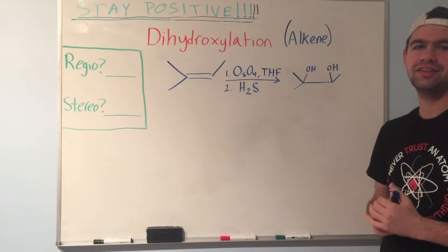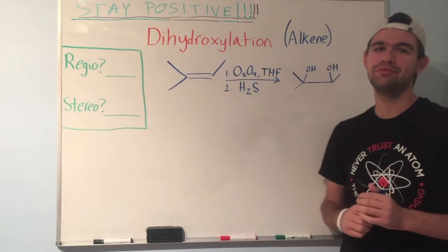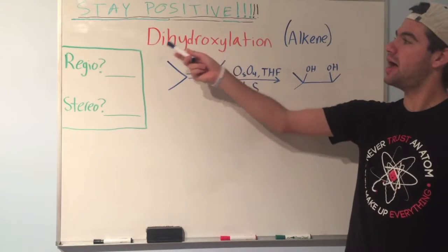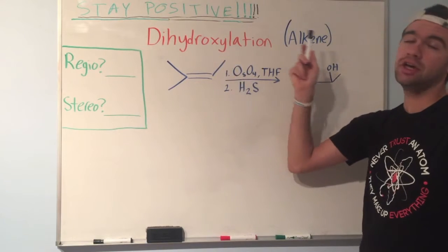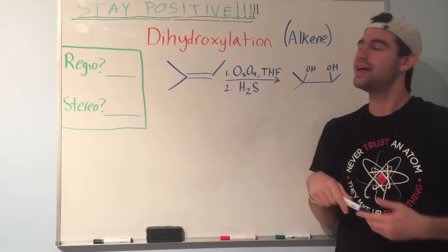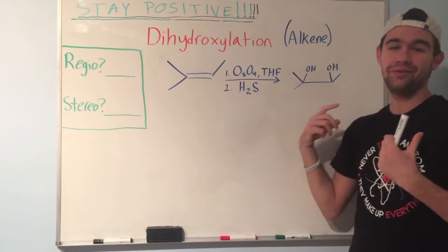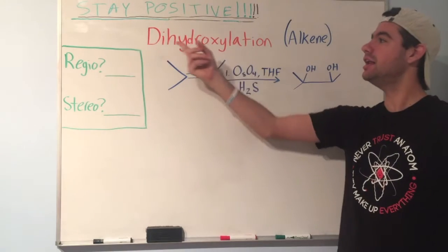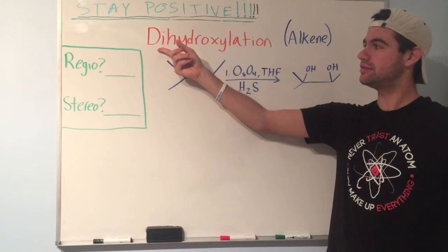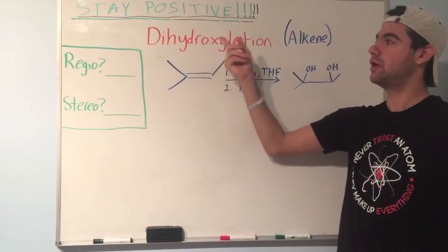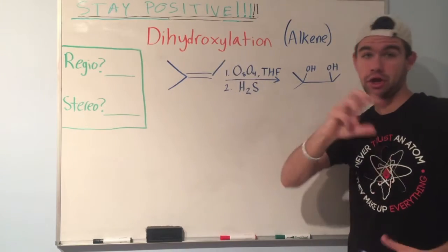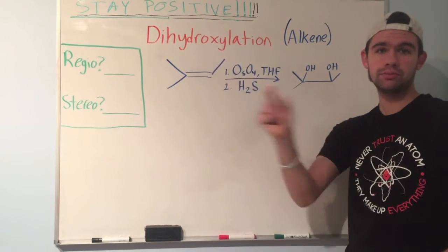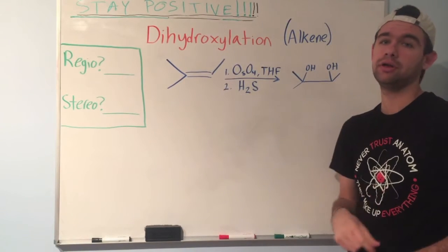Hey YouTube, how's it going? Yak Science here with another OCHEM video. Today's topic is going to be dihydroxylation of alkenes. And just like all the other alkene reactions, the name really tells us a lot. Di means two. Hydroxyl, we know, is an OH group. So we're going to be adding two OH groups across a pi bond.